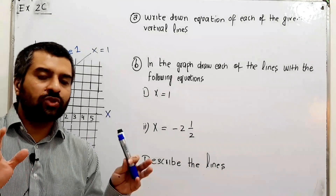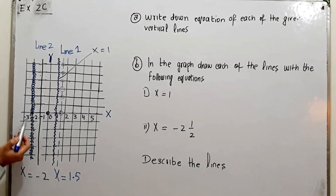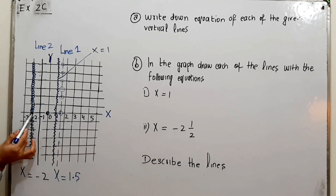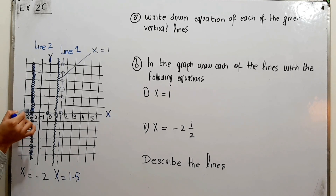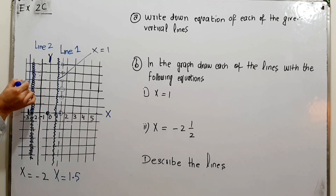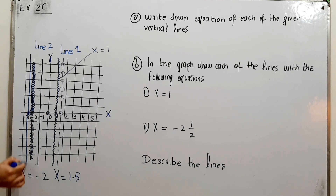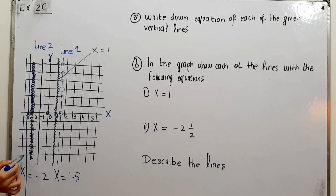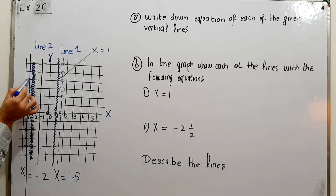The next equation is x = -2.5 (minus two and a half). The value -2.5 is between -2 and -3 on the x-axis. Locate this point and pass a vertical line through it. This is your required line where x equals -2.5, and x remains the same throughout the line wherever you locate a point.